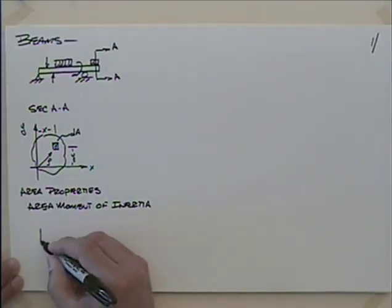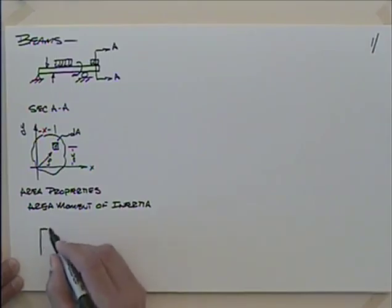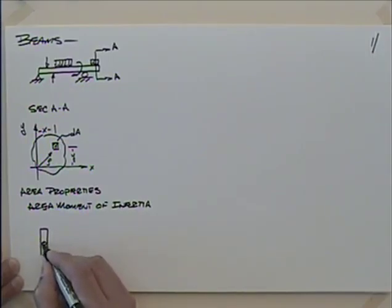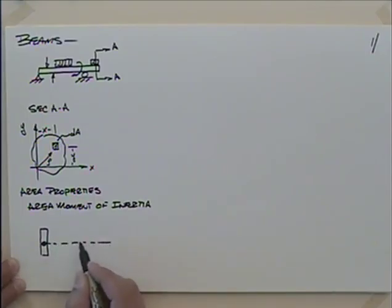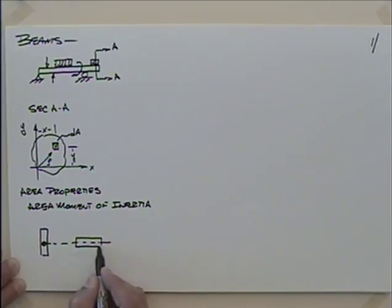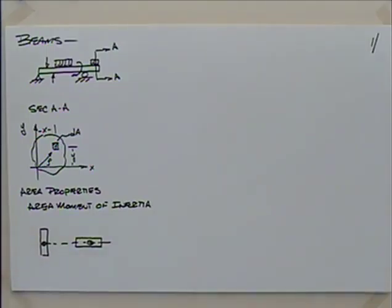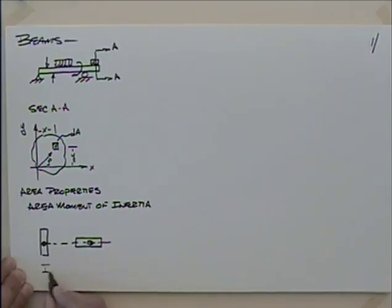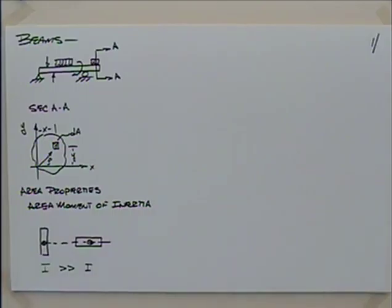Let's say that it had a cross section that looked like this — a typical arrangement for a beam — and we had a centroid there. We could lay this thing on its side without changing any of the material properties. The centroid would still be on the axis, and the moment of inertia for this i-value here would be much, much larger than that i-value there.